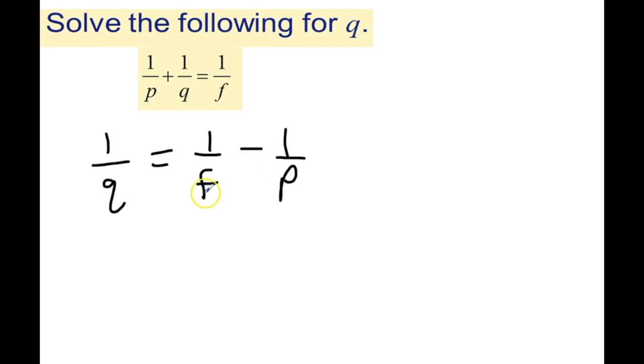But you need to recall what to do with fractions that have different denominators. And what we do with those is we get a like denominator. So a like denominator of F and P would be F times P.